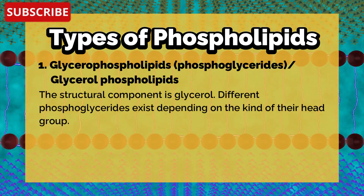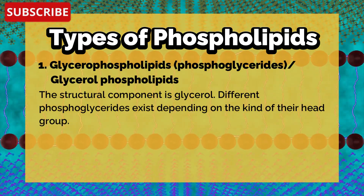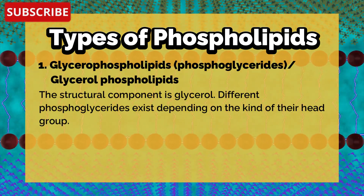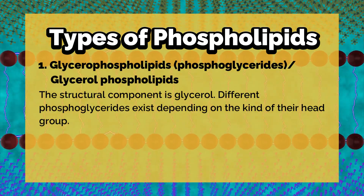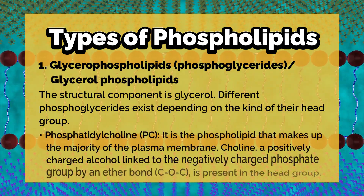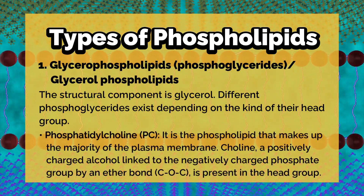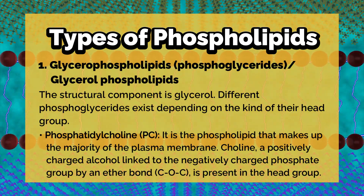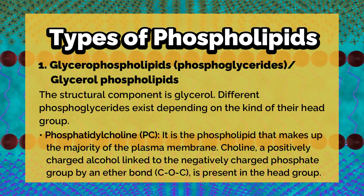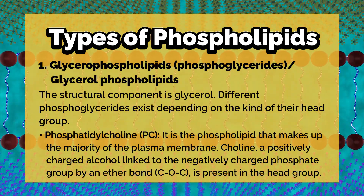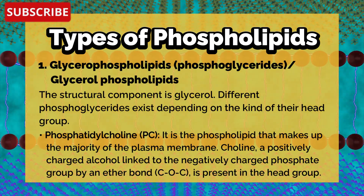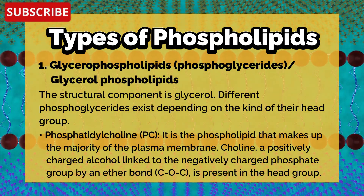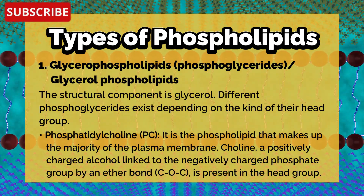Different phosphoglycerides exist depending on the kind of their head group. Phosphatidylcholine is the phospholipid that makes up the majority of the plasma membrane, consisting of choline, a positively charged alcohol linked to the negatively charged phosphate group.